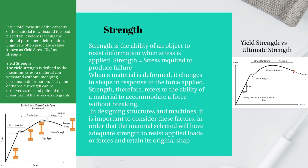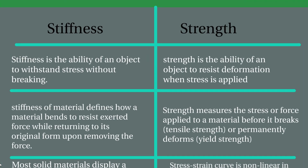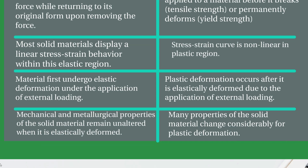The real difference: stiffness is the ability of an object to withstand stress without breaking, whereas strength is the ability of an object to resist deformation when stress is applied. Stiffness defines how a material resists external force while returning to its original form upon removal of the force, whereas strength measures the stress or force applied to a material before it breaks or permanently deforms. Most solid materials display a linear stress-strain behavior within the elastic region.